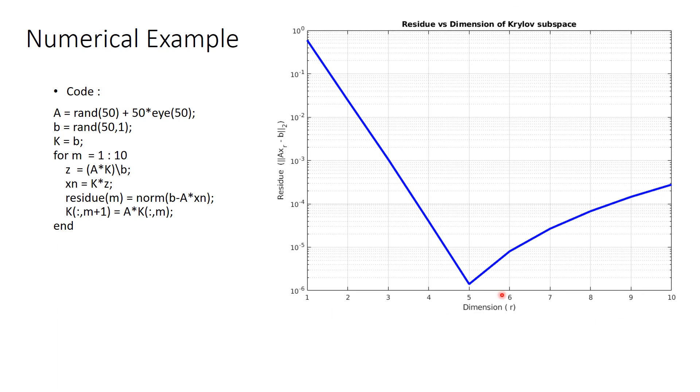In the graph, we observe that at 5 dimension, the error is 10 power minus 6. So, the same optimization problem was done in low dimension.